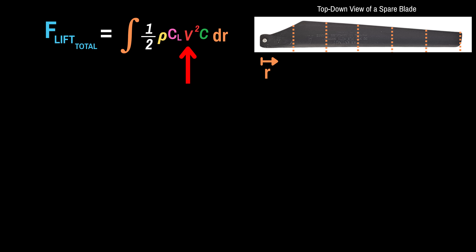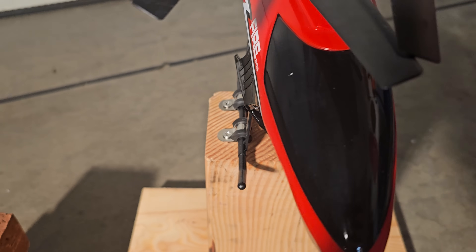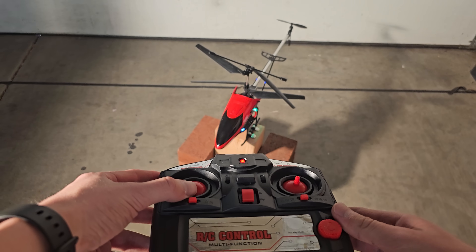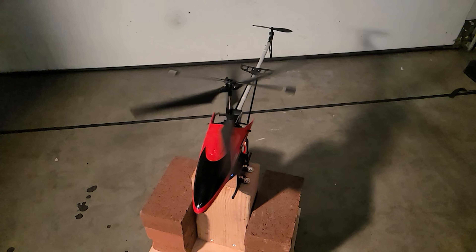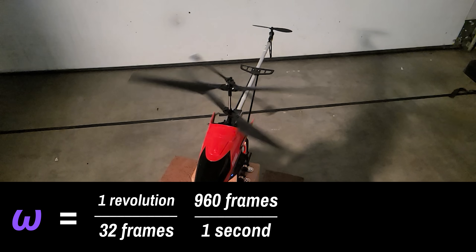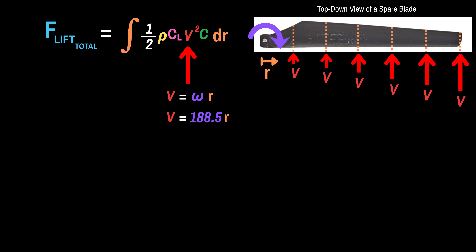Next, the velocity term, which is a bit more complicated. Because the blade is rotating in circular motion, the linear velocity of the air relative to the blade is different depending on where you are along it. Luckily, there's a simple relationship: velocity equals angular velocity times radius. I didn't yet know how fast the blades were rotating, so I strapped down the helicopter to some wood blocks, weighted it down, and gave it max power. Looking at the blades in slow motion, each blade makes one full rotation in about 32 frames. Since my camera was recording at 960 frames per second, that comes out to an angular velocity of 188.5 radians per second, about 1800 rpm.